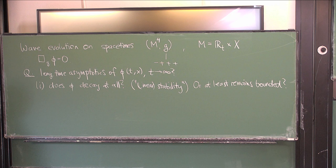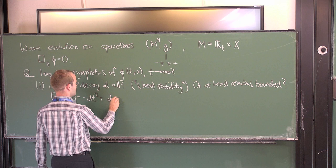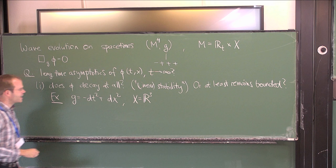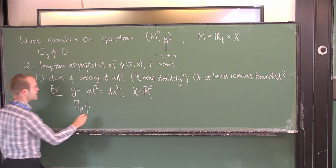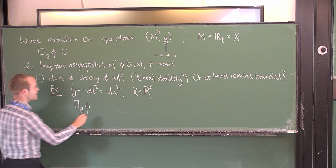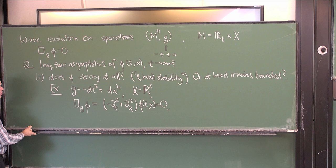Let me give you one example where your intuition might be coming from, which is the wave equation on Minkowski space. The metric here is minus dt² plus dx², where x is R³ and dx² denotes the Euclidean metric. The wave equation is: box φ equals minus the second t-derivative plus the sum of second spatial derivatives of φ, equal to zero.